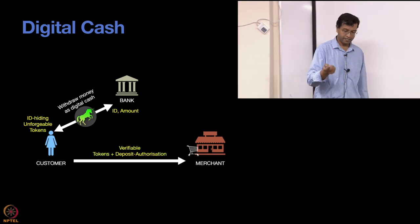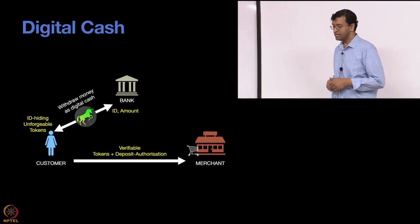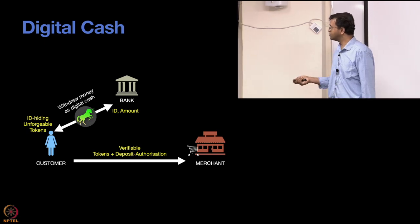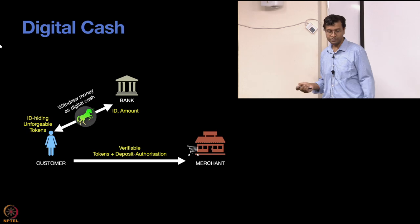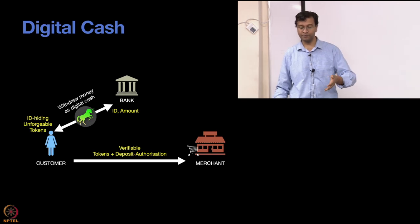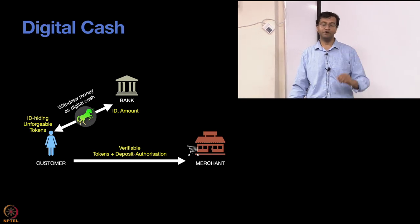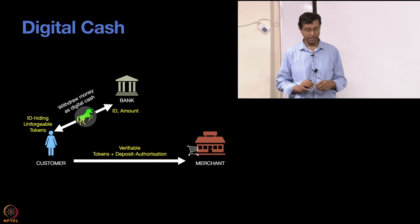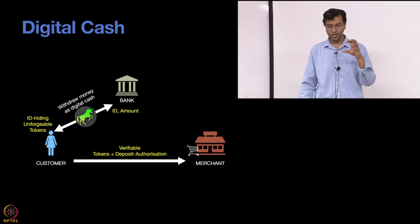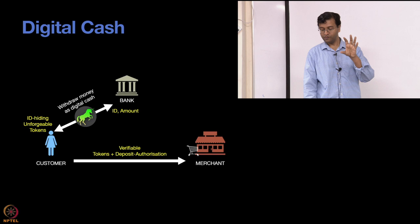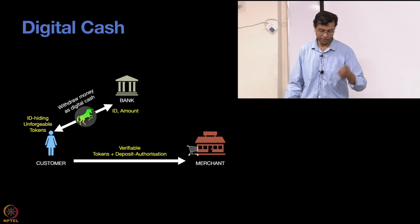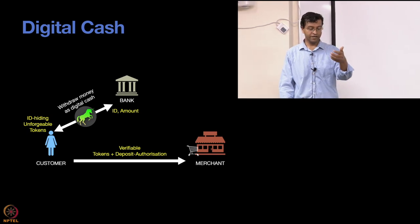Another protocol in the whole scheme is that the customer can go and make a purchase and transfer money to the merchant. There's a verifiable process — the merchant wants to make sure you're not just claiming a token from the bank. You give a token that the merchant should be able to verify the signature on. You're also authorizing the merchant — giving a deposit authorization — to say, you can now deposit this.